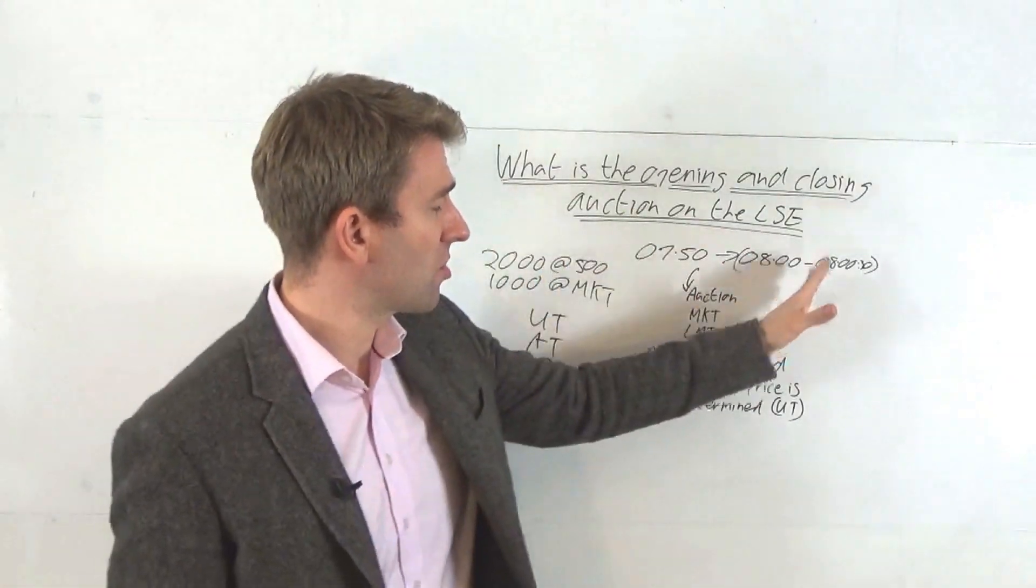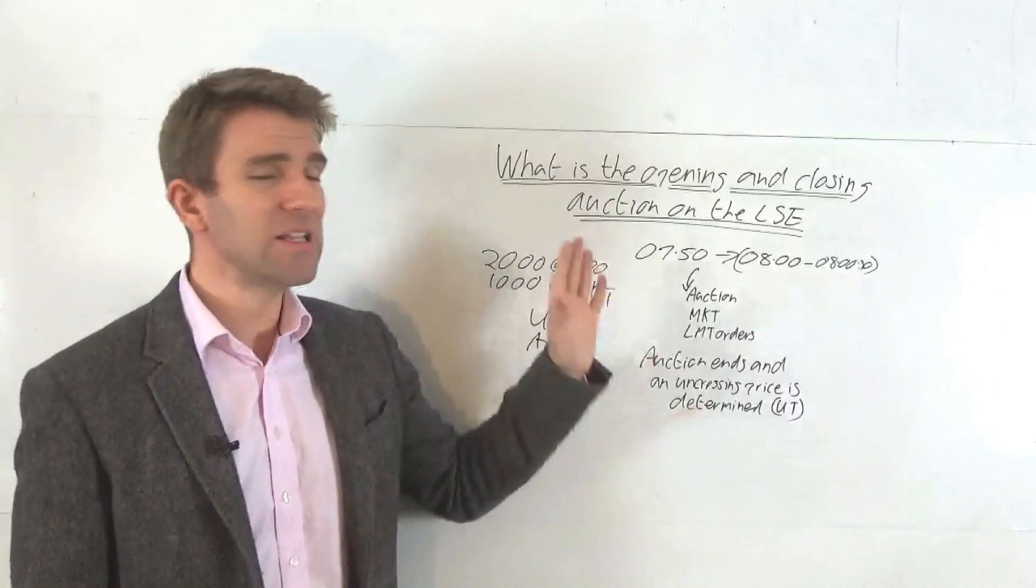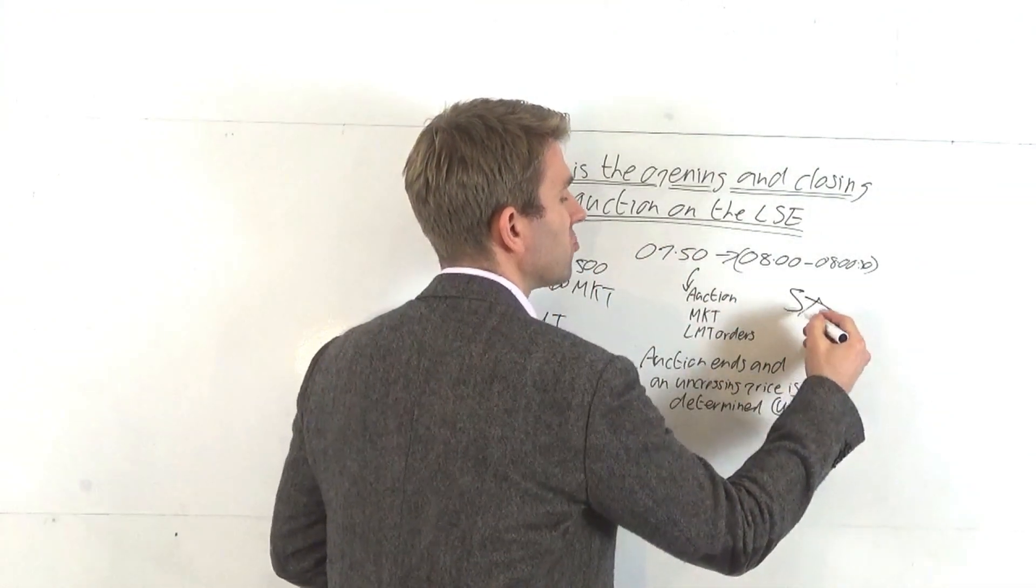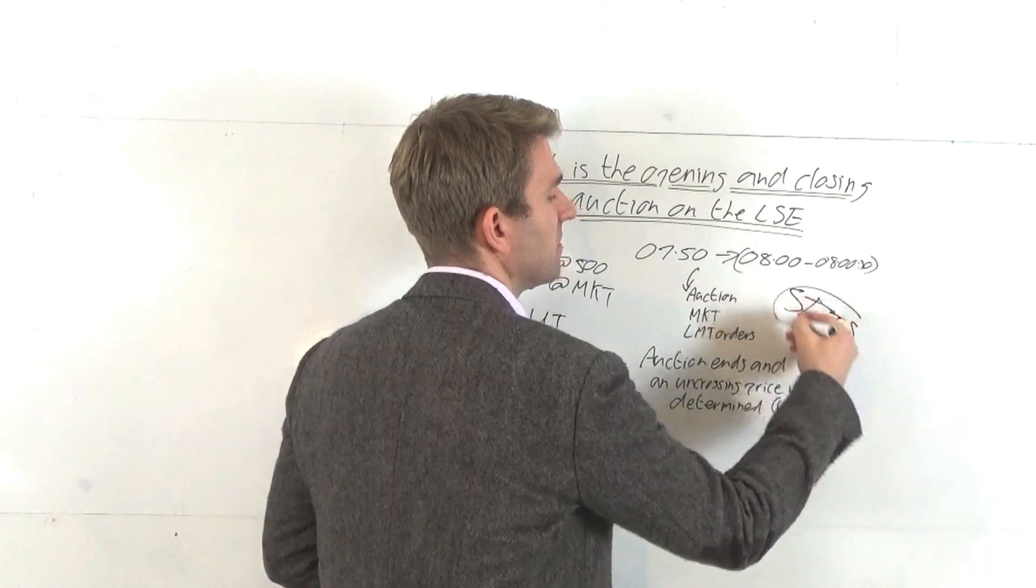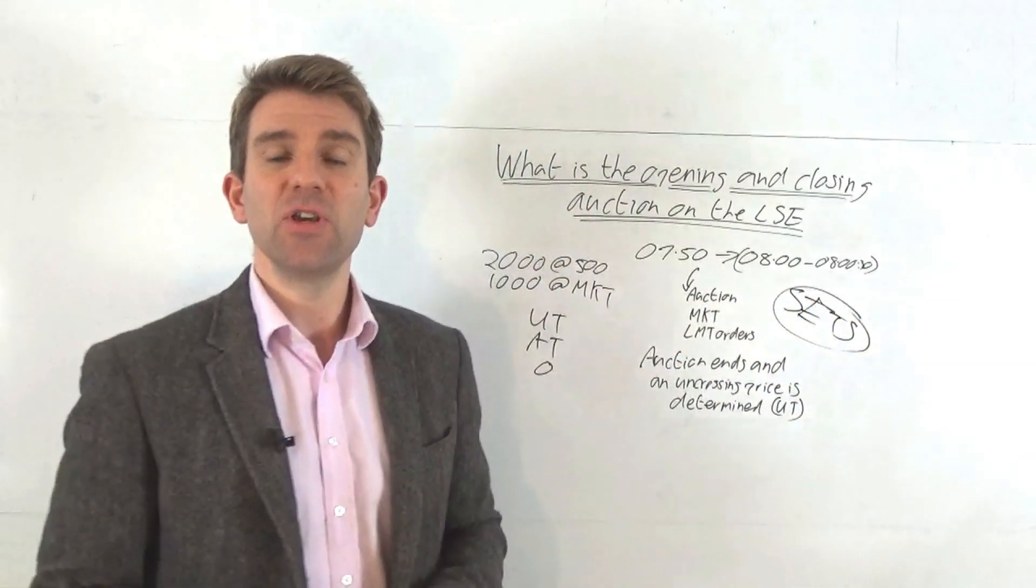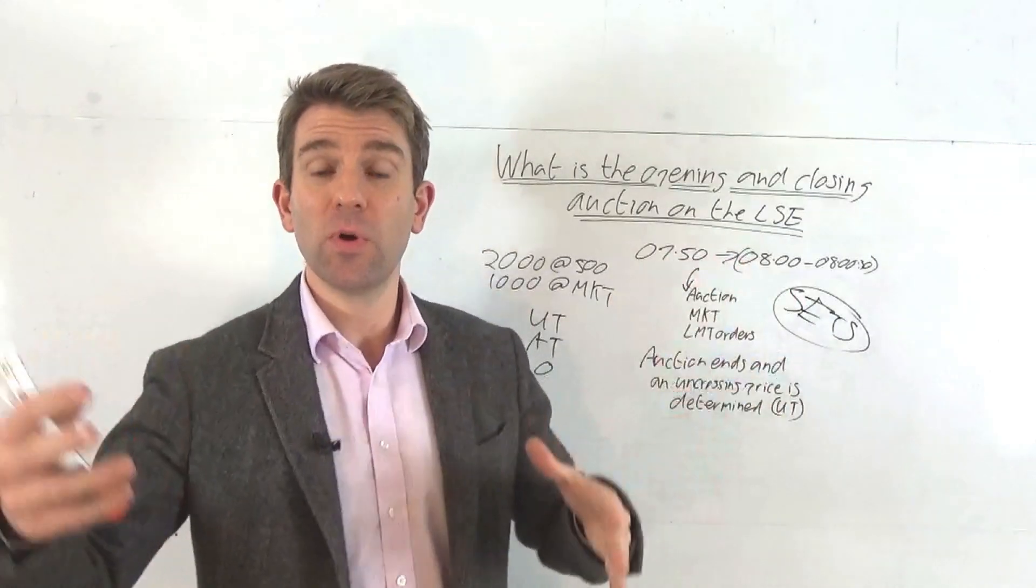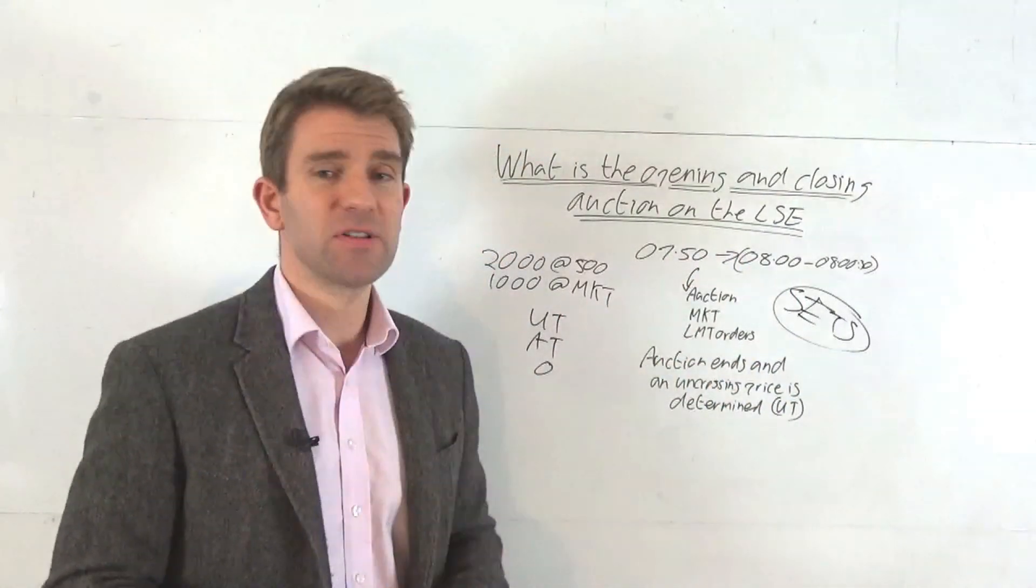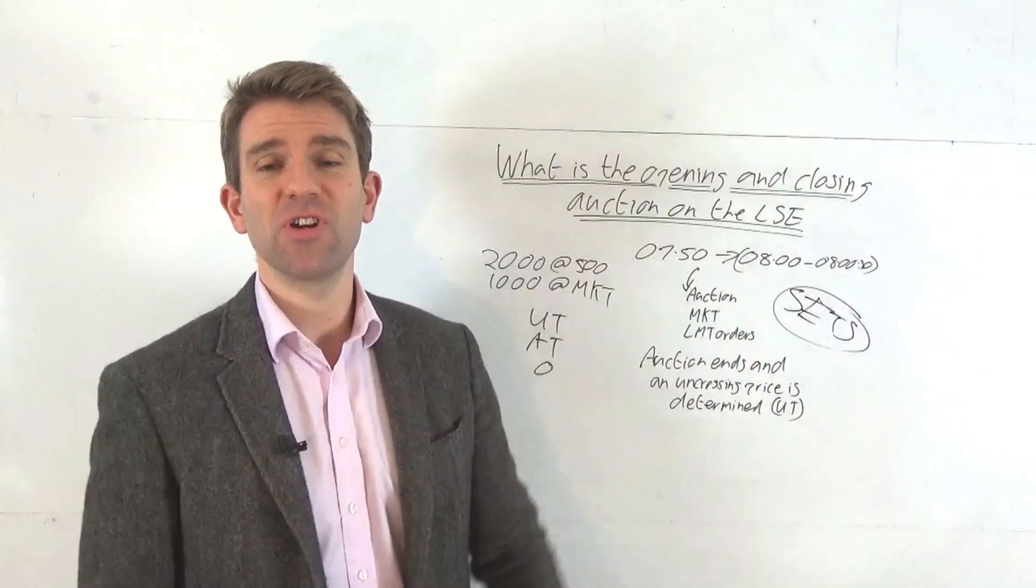So that's the auction process - London Stock Exchange, clever, works very well. It's for SETS rather than the CQ ways of trading. SETS is more automated, CQ is market maker driven. This is for SETS, when people like you and I who have access can put our orders in - that's when we get the uncrossing price. That's the auction process for London Stock Exchange shares.